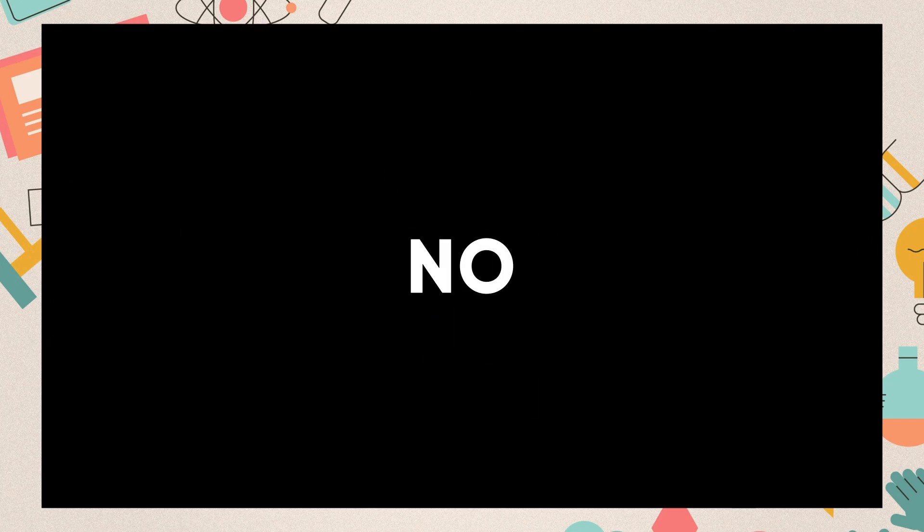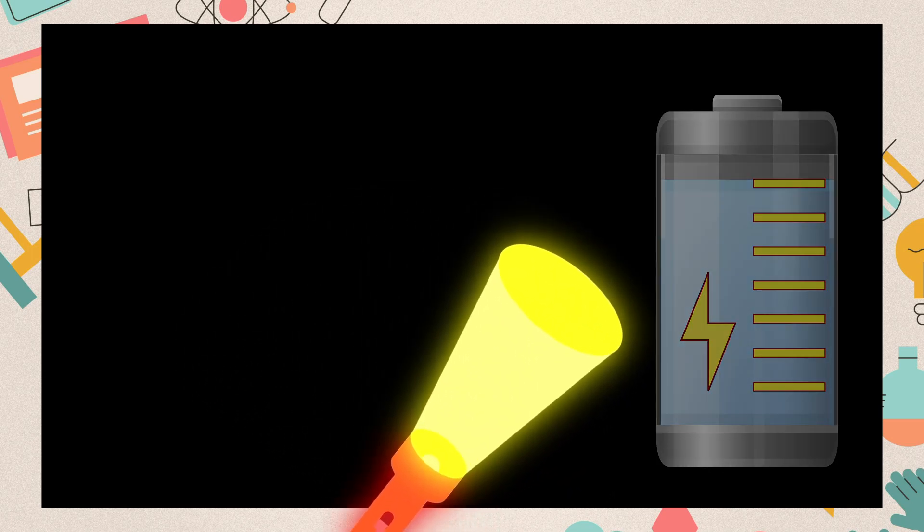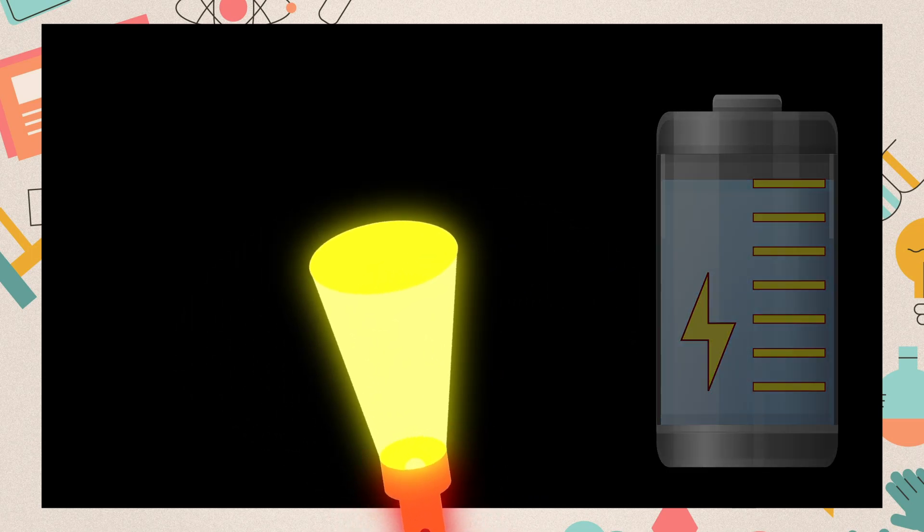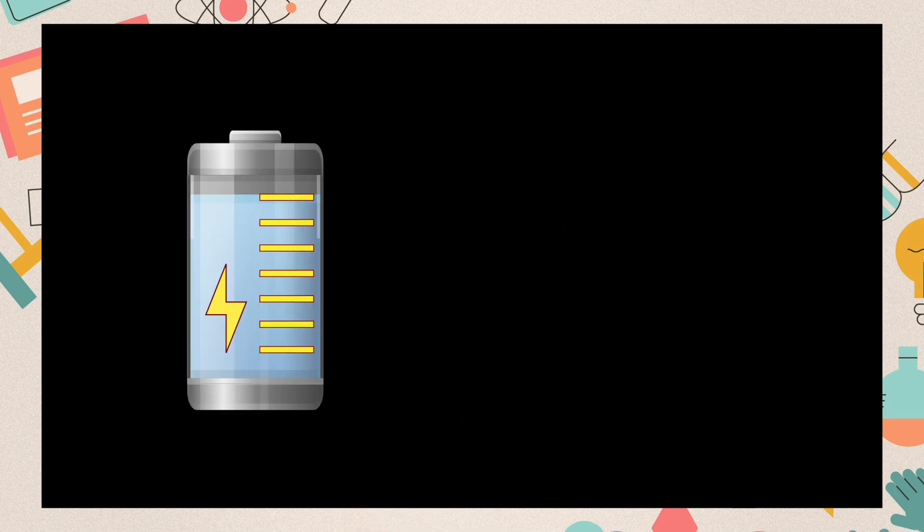Think of a day without light. What will happen? Will there be dark all day? No, we use torch and battery operated lights to get light. It gets light from an electric cell.